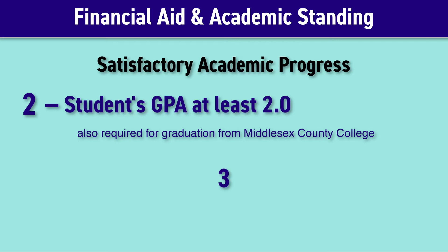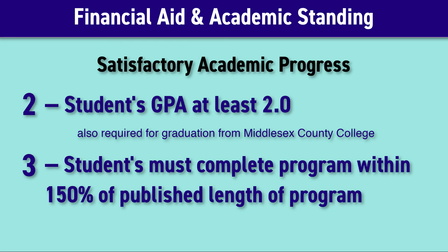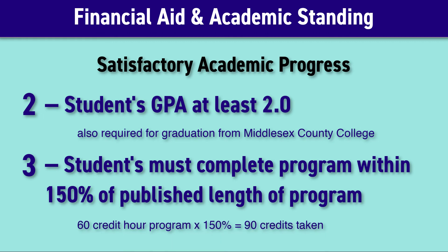Finally, a student must complete their program of study within 150% of the published length of the program. So for a 60 credit hour program, a student could take up to 90 credit hours and still be within the 150% rule.